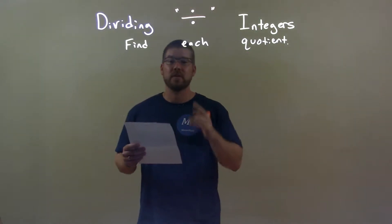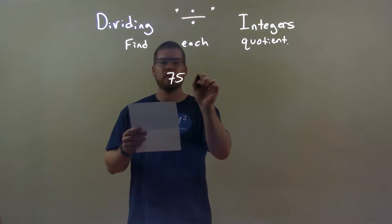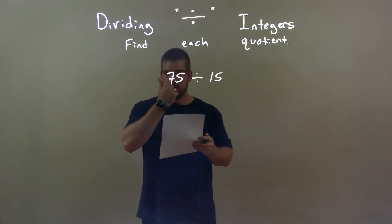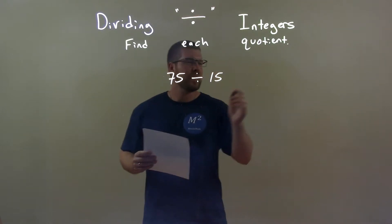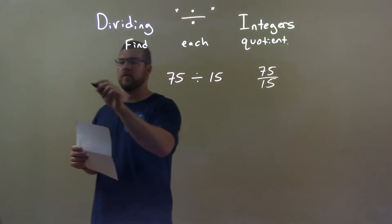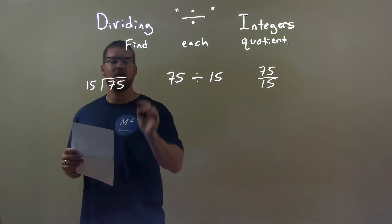So if I was given these integers, 75 divided by 15, that's the same fraction as 75 over 15, or 15 into 75.